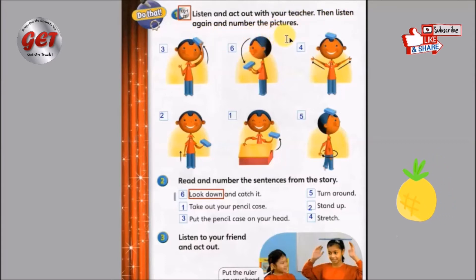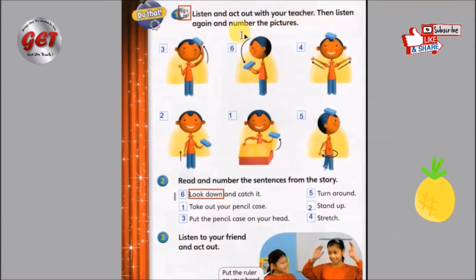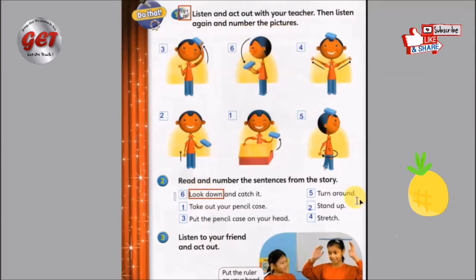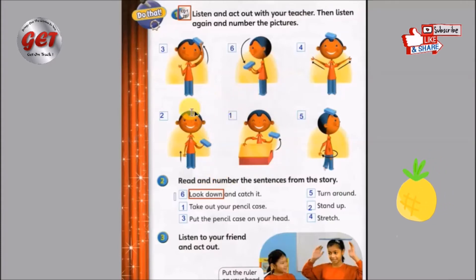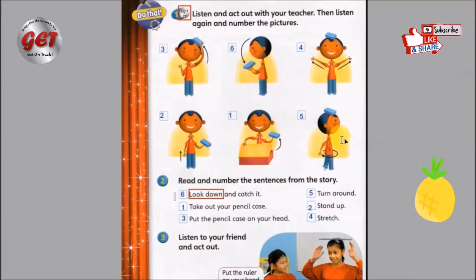Then listen again and number the pictures. 好，首先你们要跟着做动作，做完动作呢，然后你们再听多一次，然后再把这些号码给写下来。Why you have to write a number? Well, you have to number the order of your action. 小朋友们，你们要填写这些号码呢，是要表示出这些动作的次序。